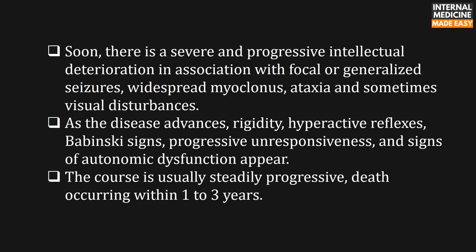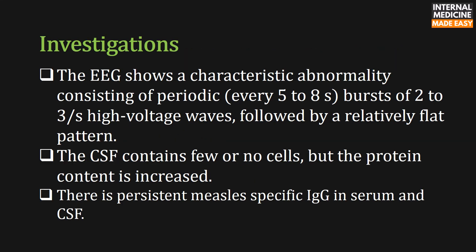Soon there is a severe and progressive intellectual deterioration in association with focal or generalized seizures, widespread myoclonus, ataxia, and sometimes visual disturbances. As the disease advances, rigidity, hyperactive reflexes, Babinski signs, progressive unresponsiveness, and signs of autonomic dysfunction appear. The course is usually steadily progressive, with death occurring within one to three years.